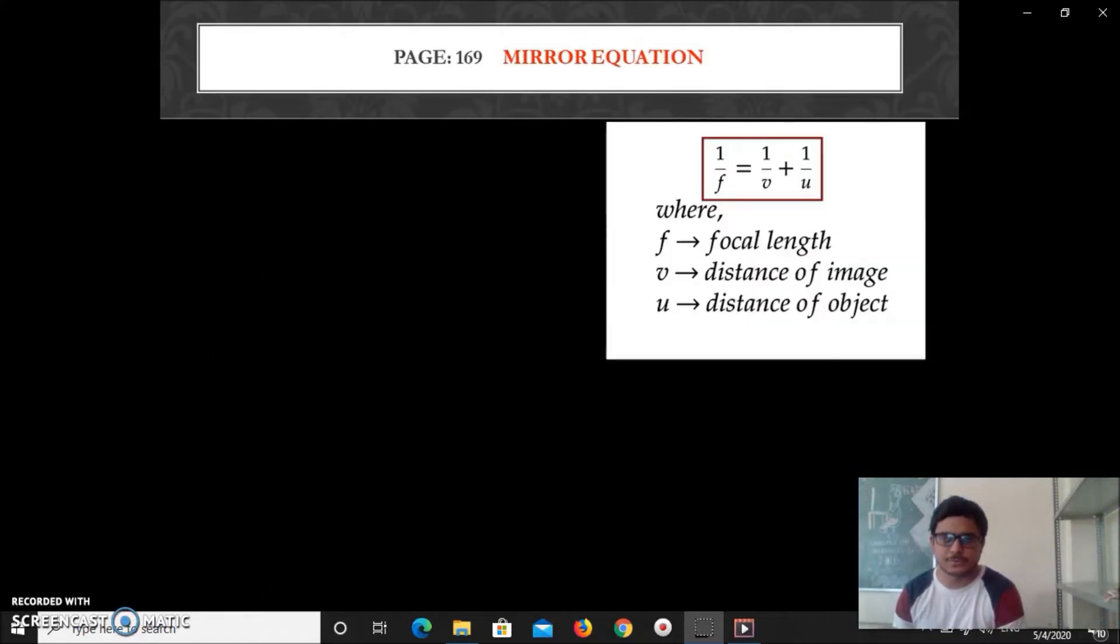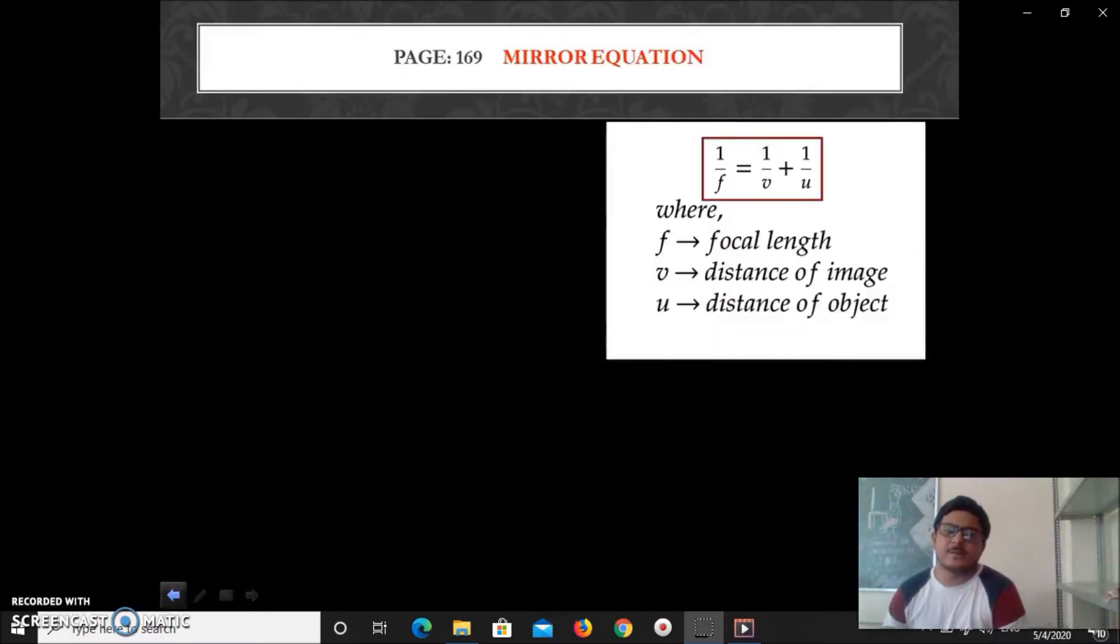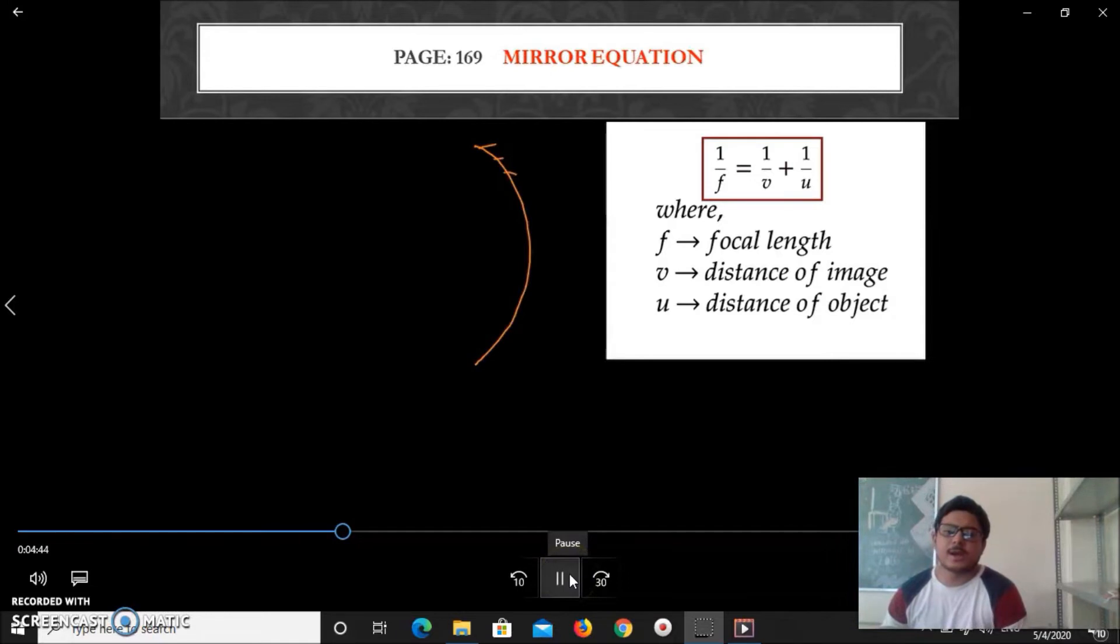Now we will discuss the mirror equation or mirror formula for curved mirror. For a curved mirror, three important terminology is object distance, image distance, focal length. Let's try to understand. So pole, focus, C I have taken, and my object candle is here.